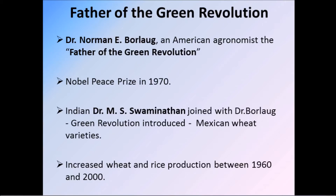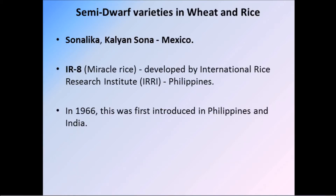Dr. Swaminathan joined with Dr. Borlaug and the Green Revolution was introduced, resulting in increased wheat and rice production between 1960 to 2000. Semi-dwarf varieties in wheat and rice — Sonalika and Kalyan Sona — are semi-dwarf varieties of wheat developed from high-yielding semi-dwarf fertilizer-responsive wheat varieties from Mexico. IR-8 is a high-yielding semi-dwarf rice variety developed by the International Rice Research Institute (IRRI), Philippines, in 1966, and was introduced in Philippines and also in India.